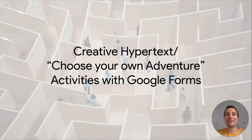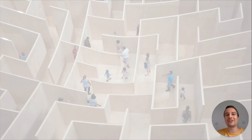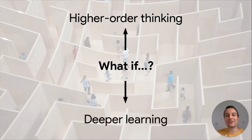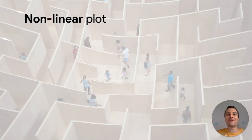The reason why I think this is so important for the classroom is because at the core of these activities is the big question: what if? This question leads to higher order thinking because your students are constantly evaluating and analyzing different options, and it leads to deeper learning because your students are going to be creating cognitive maps or cognitive networks — and the reason for that is they create nonlinear plots.